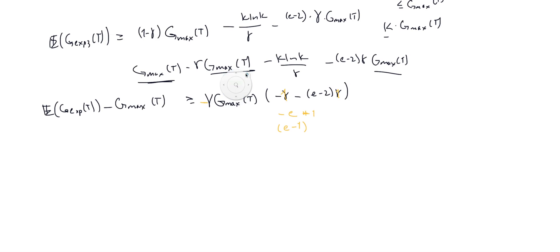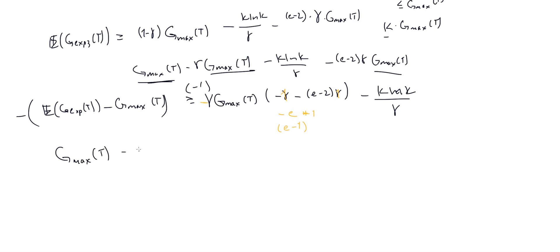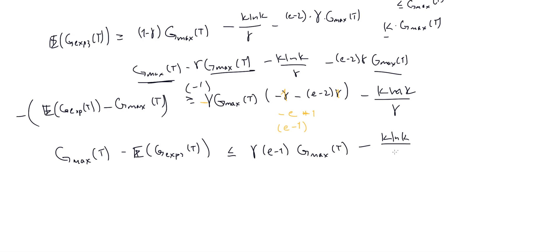Putting it all together and flipping the inequality — multiplying through by minus 1 — we get that g_max of T minus the expected value of g_{EXP3} of T is less than or equal to gamma times (e minus 1) times g_max of T plus k log k over gamma. This is exactly the statement of the theorem, and now we're done.